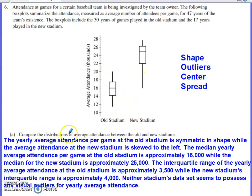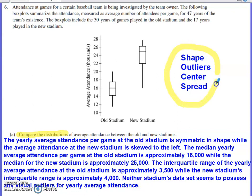In part A, it says compare the distributions of average attendance between the old stadium and the new stadium. If you're ever asked to describe a distribution or compare distributions, you want to make sure you hit on these elements. I use the acronym SOCKS: Shape, Outlier, Center, and Spread. You want to make sure you comment on each of those elements.